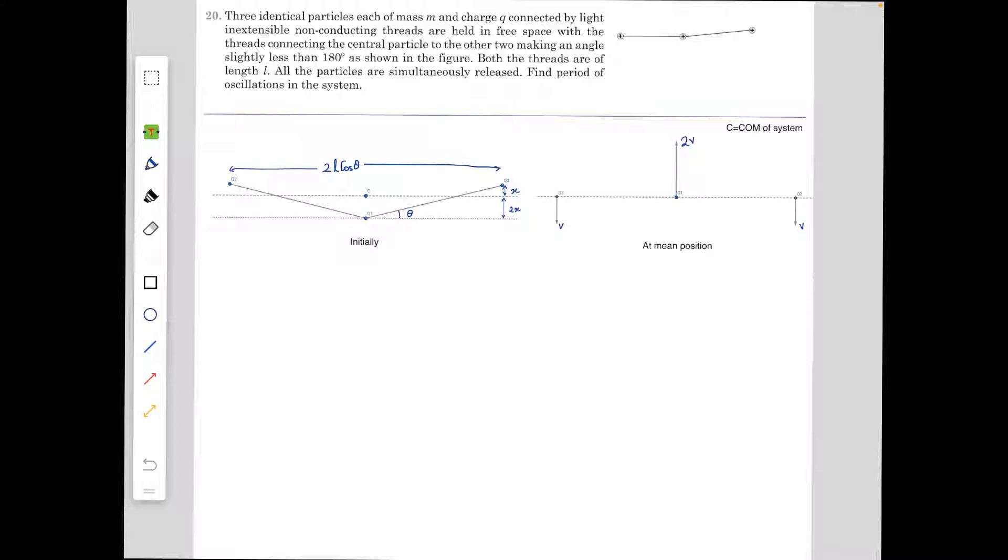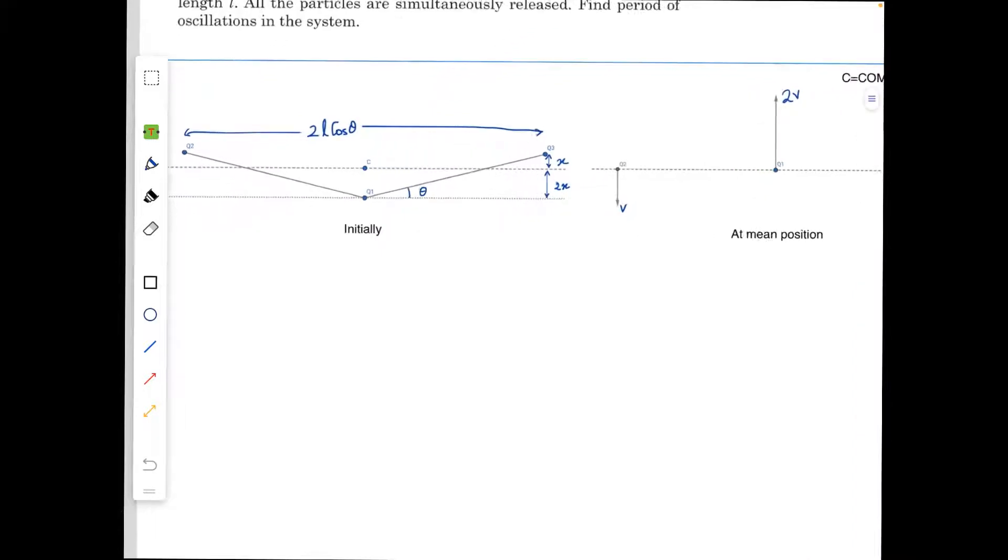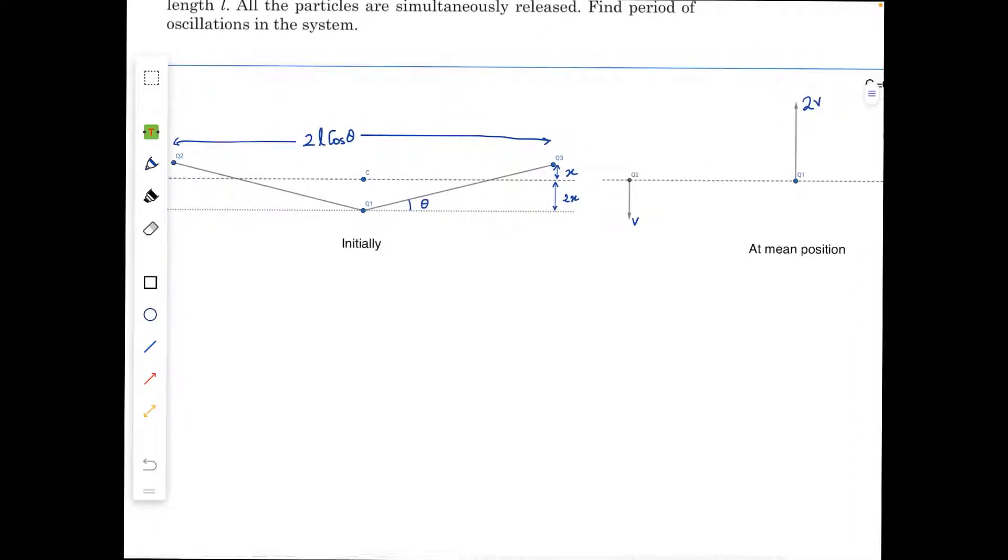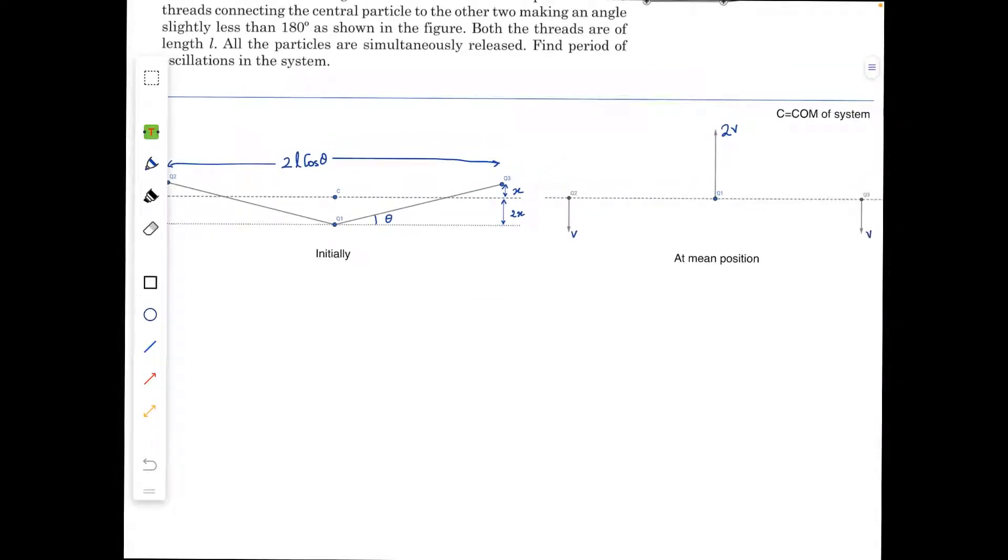In this, what we can observe first of all is that the center of mass will be at rest at all times. It will have no velocity as there is no external force on the system and initially the system was at rest. So let's assume that the angle made is theta with the horizontal as shown in the figure. By symmetry we can say that the central particle at mean position will have a velocity of 2V and the other two will have a velocity of V because momentum will be conserved.